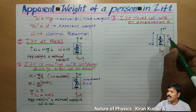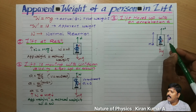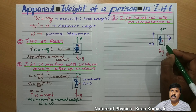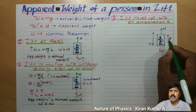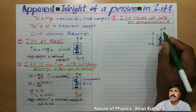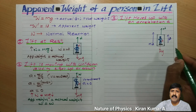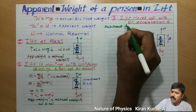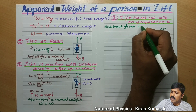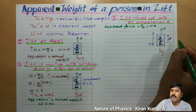Third case: lift moving up with an acceleration A. A person of mass M is in the lift, standing on the weighing machine. The lift is moving in the upward direction with acceleration A, so the resultant force is equal to MA. Normal reaction is in the upward direction and the weight of the person is acting in the downward direction. There is an unbalanced force, and that unbalanced force is taken as the resultant force. The resultant force is represented by Fr, that is, mass M moving with acceleration A.